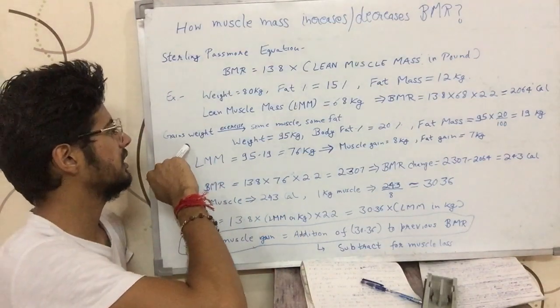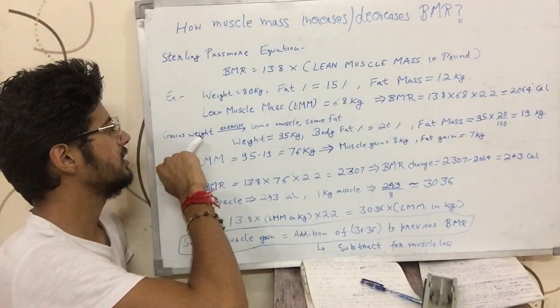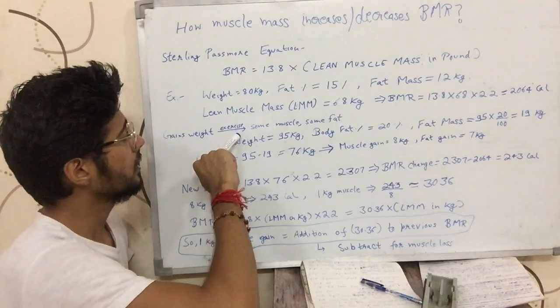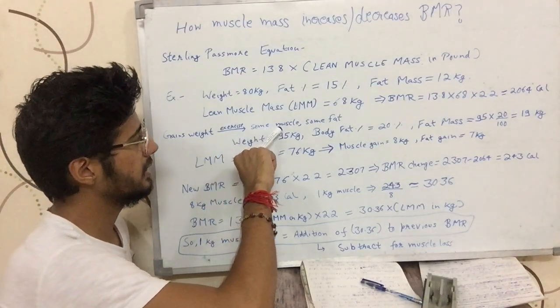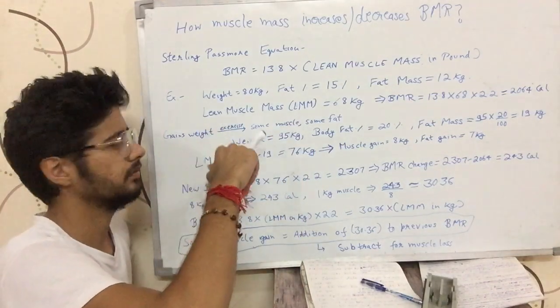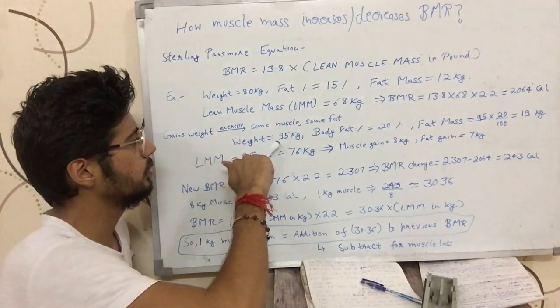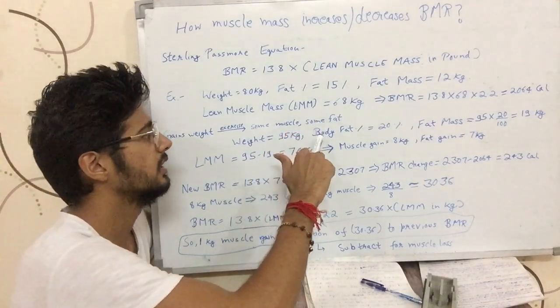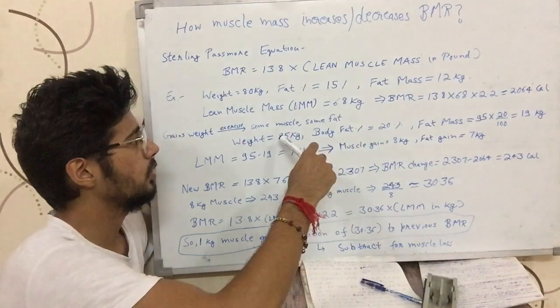Now, this person gains weight by exercising in the gym. He gains some muscle and some fat within, let's say, one year. His new weight is 95 kgs and he checks his new body fat percentage, and it comes out to be 20%.